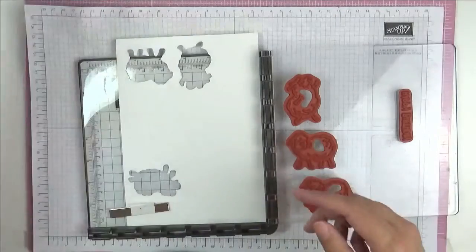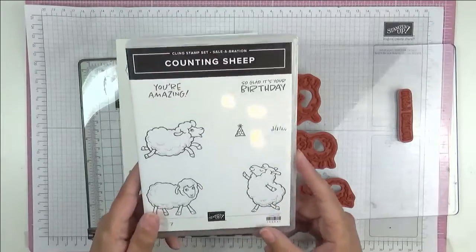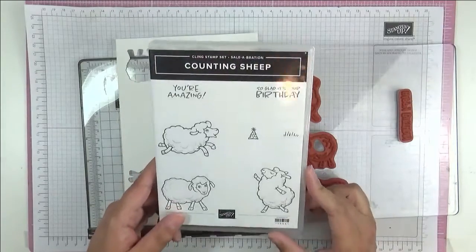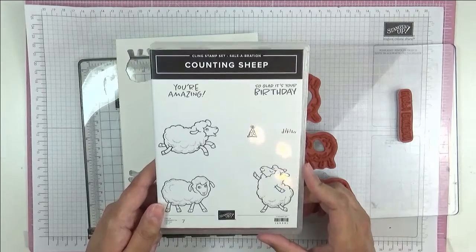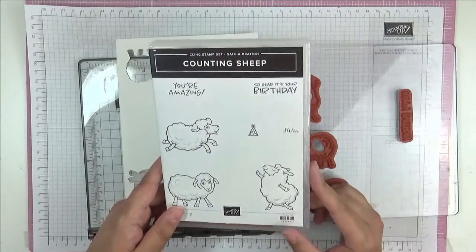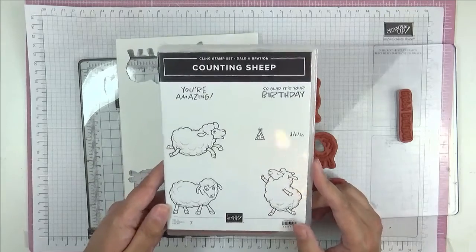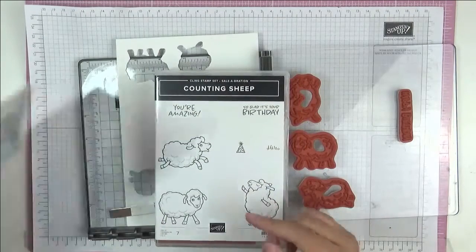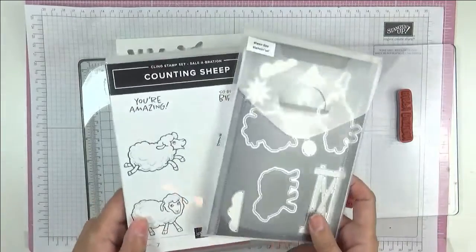So let's get started. I'll put this aside somewhere safe. The stamps I'm going to be using, the first one is called Counting Sheep. We're in celebration at the moment and for every £45 you spend you can earn a free item. And this is one of the free items, the sheep stamp. It has a matching set of dies that we're going to be using as well.